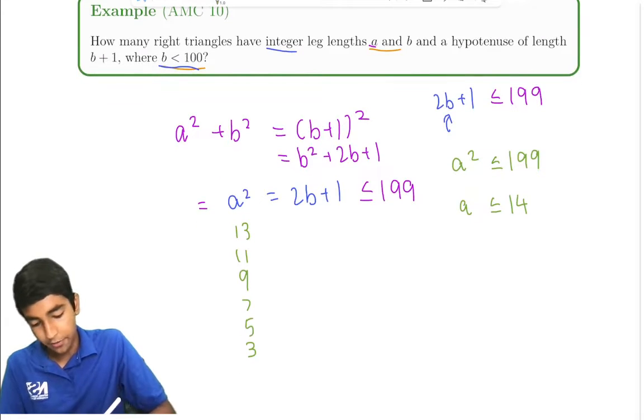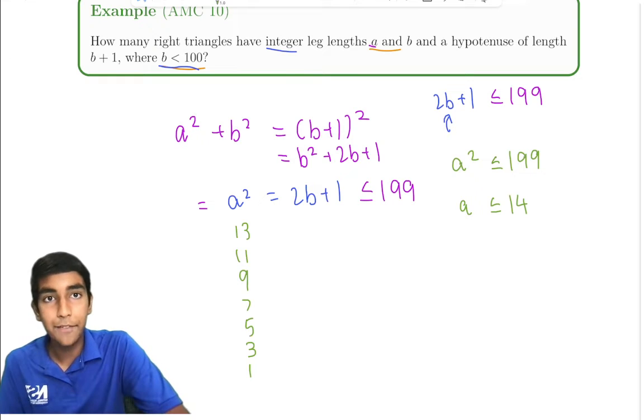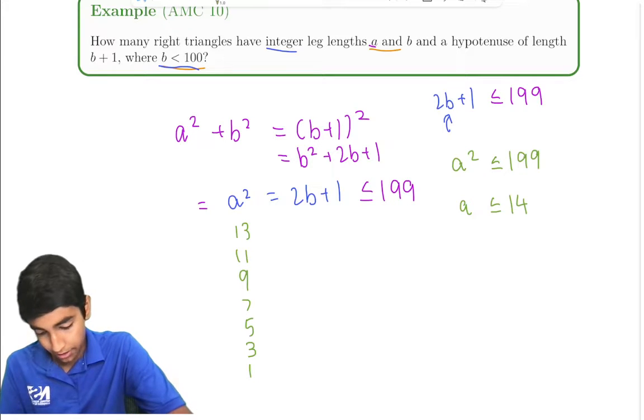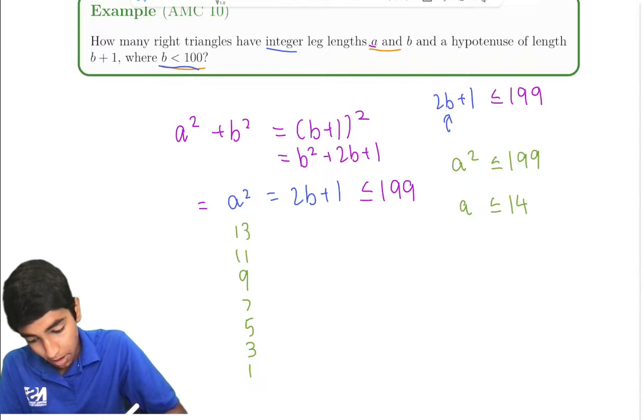So we're asked to find how many of these values exist. Now all we have to do is count the number of such values. And it turns out there's only a total of 7 possibilities here.